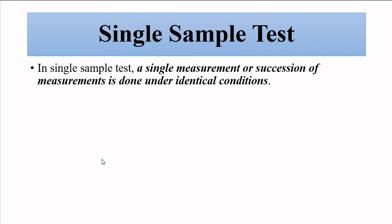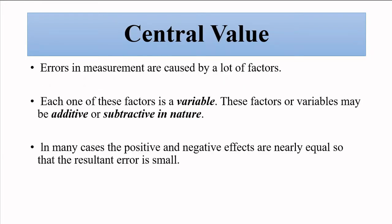In a single-sample test, all of these conditions are kept the same and multiple observations or readings are taken. From these readings, we determine an important parameter called the central value. Deviations in measurement are caused by many factors — human, environmental, and instrument — and each can be considered a variable, additive or subtractive in nature.